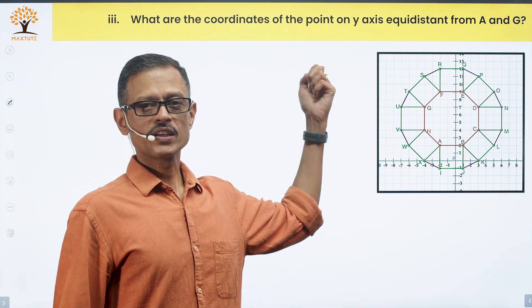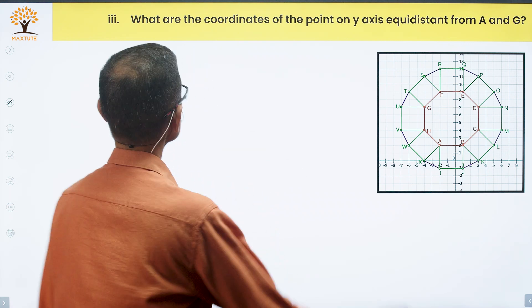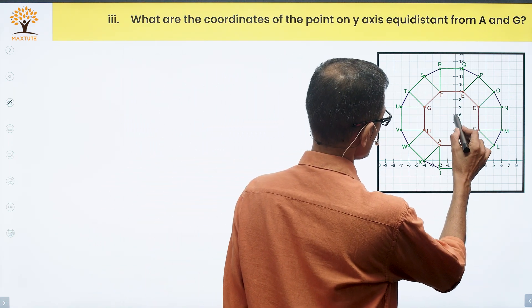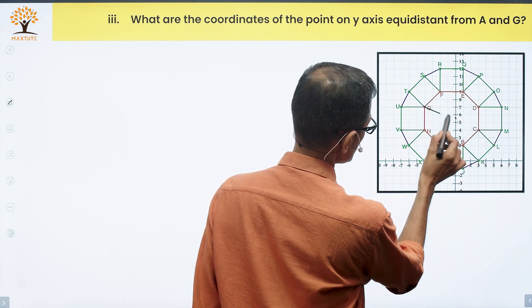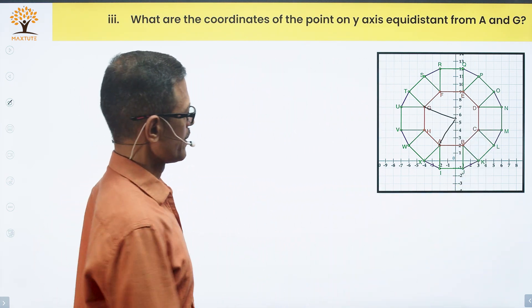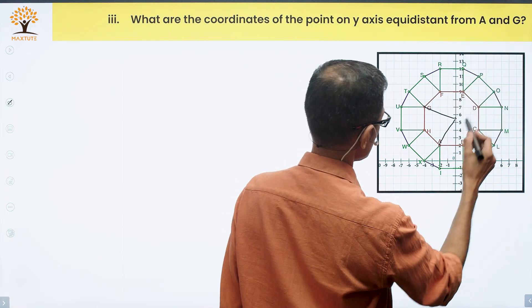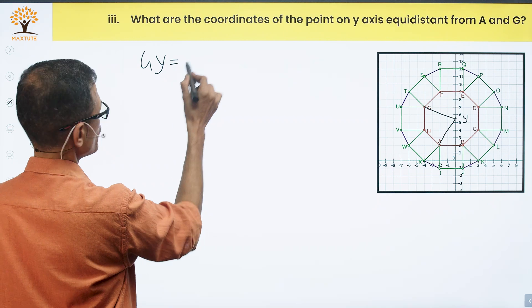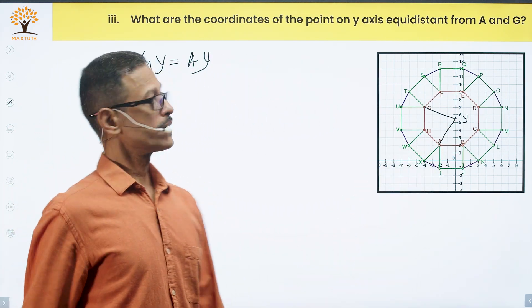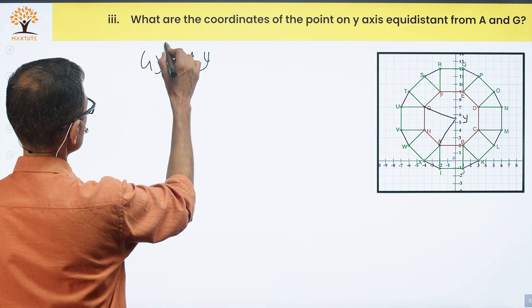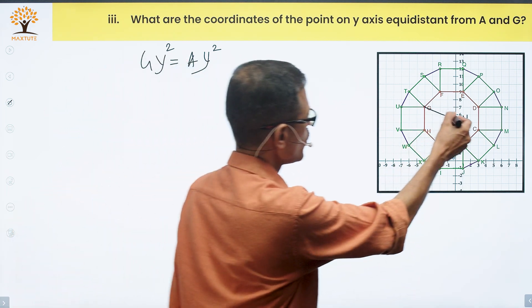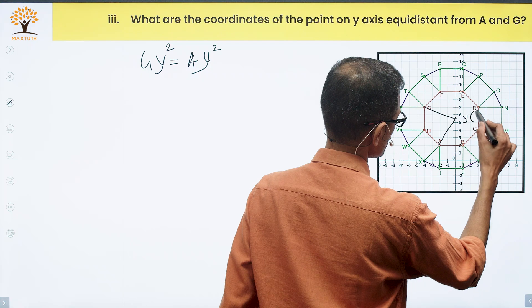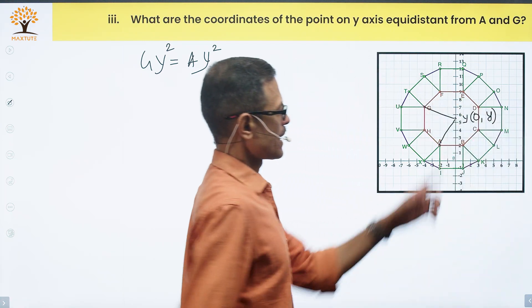Third one has internal choice. What are the coordinates of the point on Y-axis that is equidistant from A and G? The point is somewhere here. From G to this point and from A to this point, it's the same distance. We'll call this point Y. Essentially GY equals AY. It's equidistant from both A and G. If it's equidistant, then GY square equals AY square.